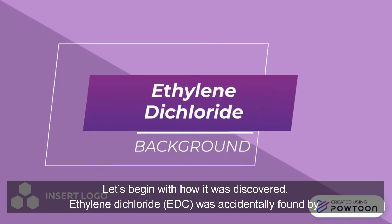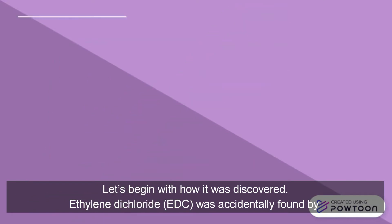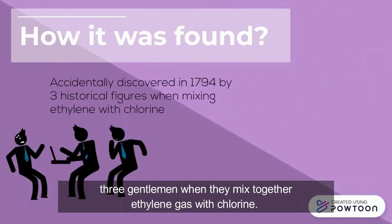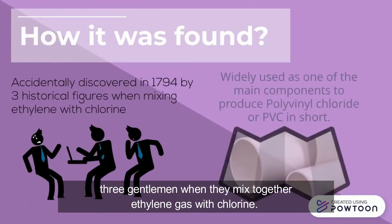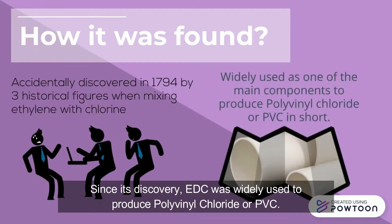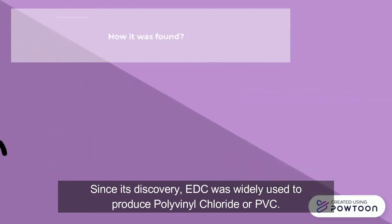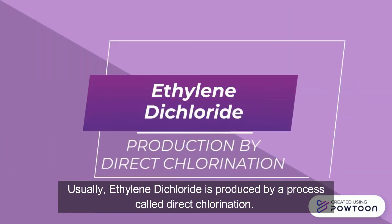Let's begin with how it was discovered. Ethylene dichloride was accidentally found by three gentlemen when they mixed together ethylene gas with chlorine. Since its discovery, EDC was widely used to produce polyvinyl chloride, or PVC.